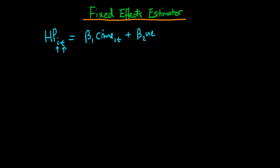You can suppose that if the unemployment rate is high in that given city then there are likely going to be lower house prices because people can afford to pay less. Instead of including all the time dummies I'm going to assume that we've implicitly done that. So all I'm going to include here as a final term is the unobserved heterogeneity and this idiosyncratic error u_it.